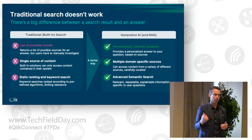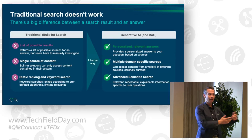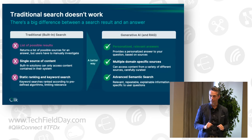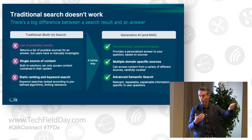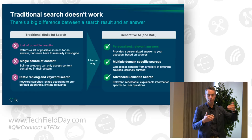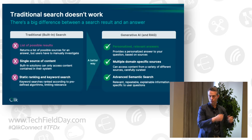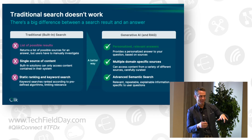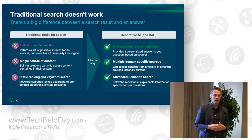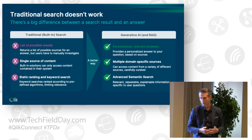Doing semantic search a few years ago, you would go into enterprises and say we can help your users get direct answers to their questions. Enterprises would say, I have a search engine. And you would say there's a complete difference between a search result and an answer. Now that everyone has used ChatGPT, they understand that. We believe every search bar in every enterprise in the world is going to have a RAG or answer engine behind it in the next three to five years — a massive switch from search results to personalized, direct, contextually relevant answers.